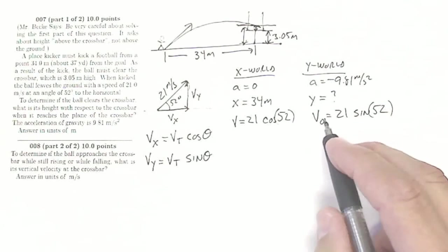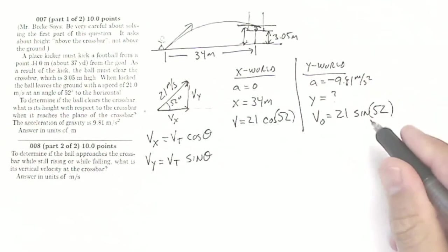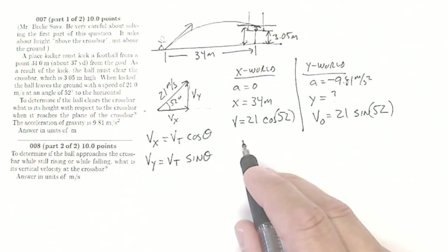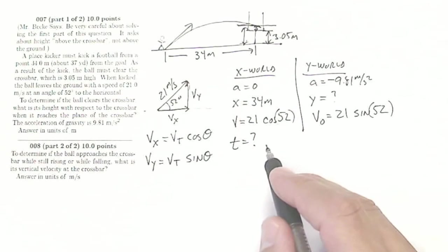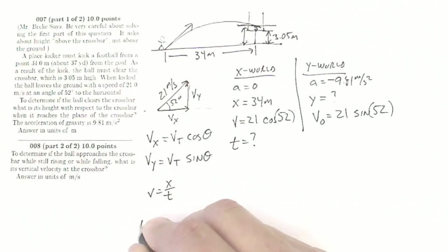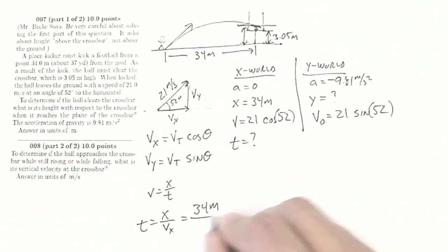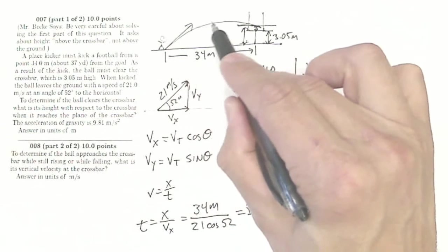Now that I have an initial velocity and an acceleration, I'm looking for a height. If I only had time that would be great, but I don't have time in the y-world. This is one of those cases where I can get time in the x-world because I have my velocity and my displacement. Since velocity equals displacement over time, my time equals displacement divided by velocity — that's 34 meters divided by 21 cosine 52. This gives me the time it takes to reach the goal.